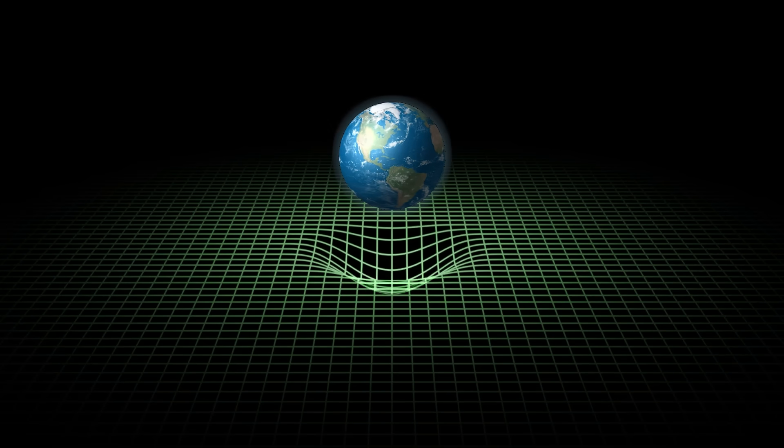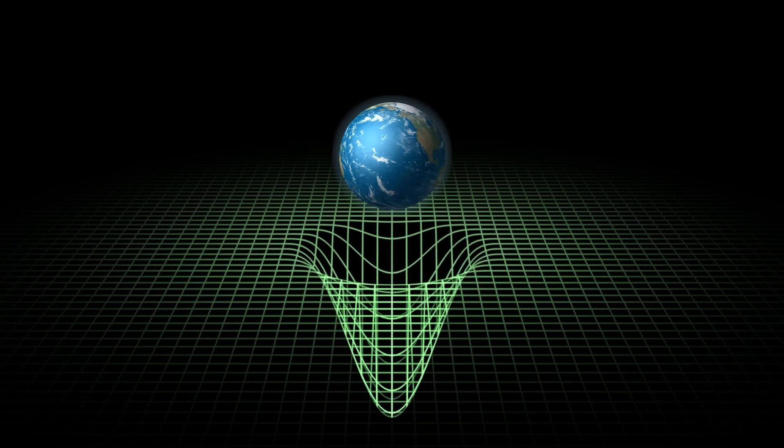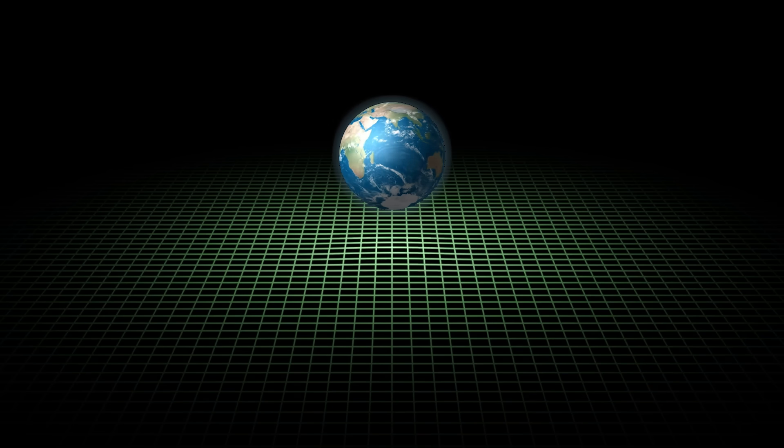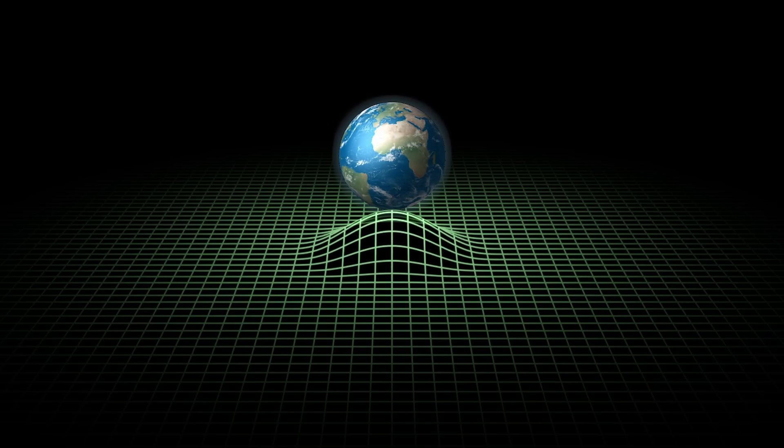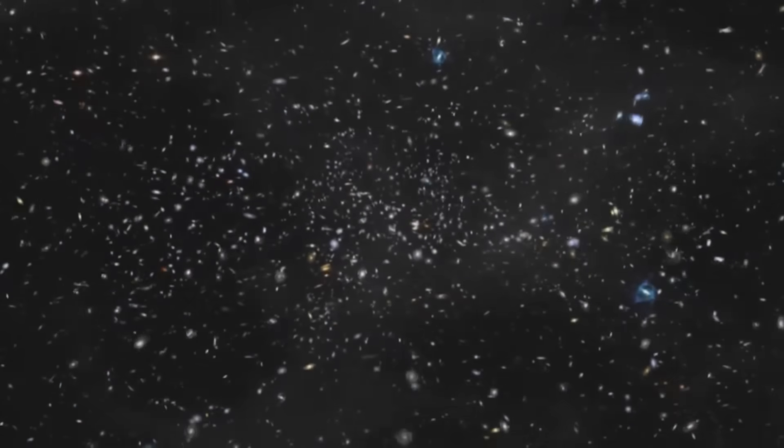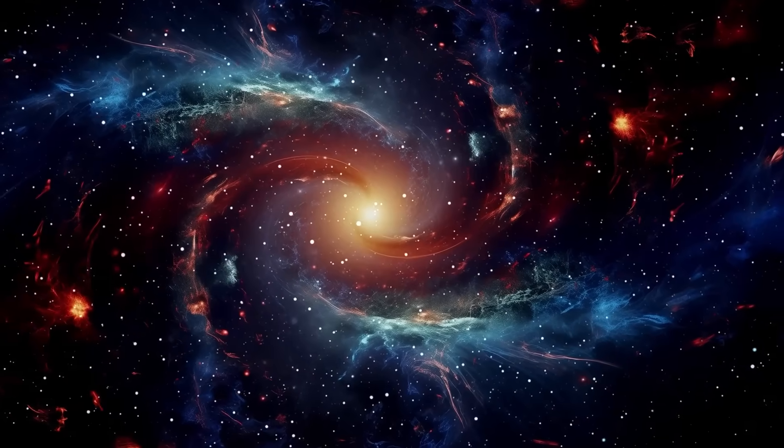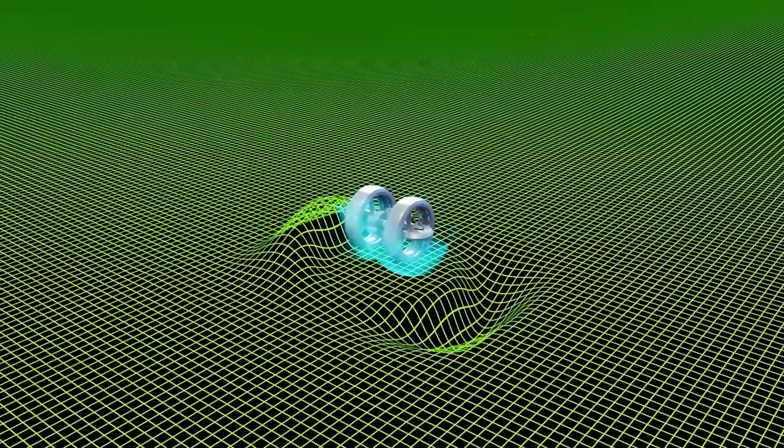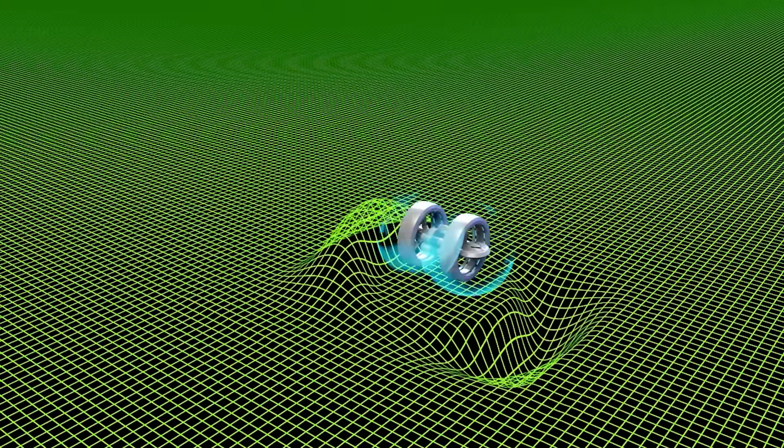What if gravity repelled instead of attracted? That might sound like something straight out of science fiction, but repulsive gravity is not only real, it may have shaped the entire history of the universe, from the Big Bang to its ultimate fate. In fact, without it, the cosmos as we know it might not even exist. Today we're diving deep into this mind-bending idea. What is repulsive gravity? How does it explain the accelerating expansion of the universe? And could it hold the key to faster than light travel? That's coming up, right now.